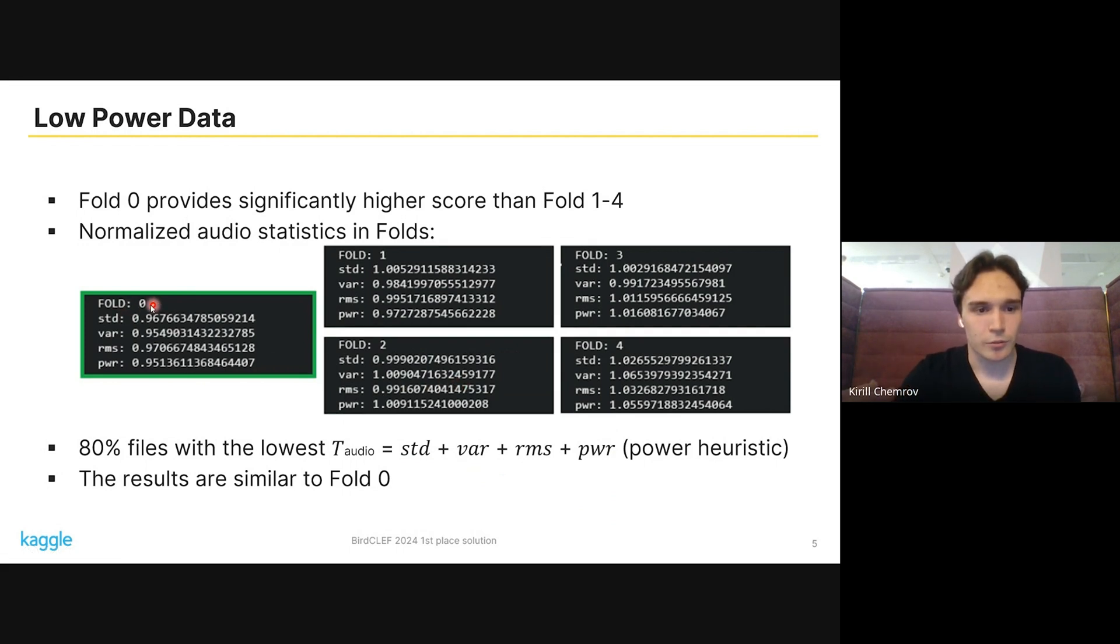We had the idea to take 80% of all files with the lowest value of sum of some of these statistics. As a result, we train our model only on this data and obtain the same score as fold zero, but the data is not related with fold zero. We consider it's also a good idea to use both fold zero and this splitting with 80%.